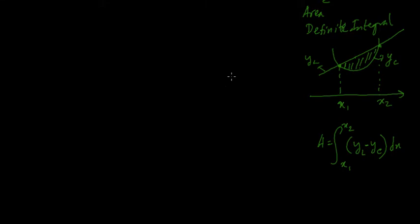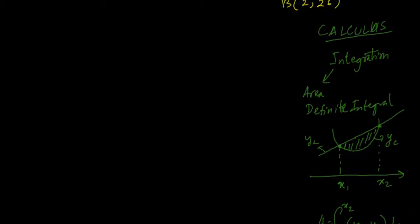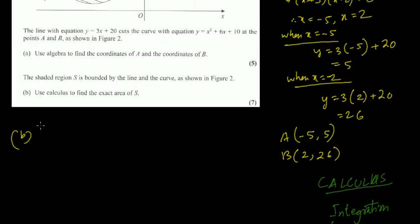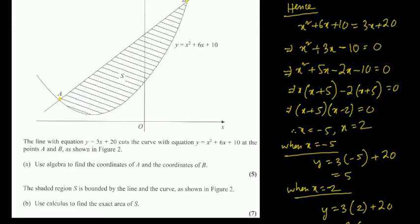On the other hand, if the curve is above and the line is below in the shaded region, the area would be the integral from x1 to x2 of (y curve minus y line) dx. It all depends on which one is above in the shaded region. Back to our problem: the line is above and the curve is below, and the x-coordinates are minus 5 and 2.